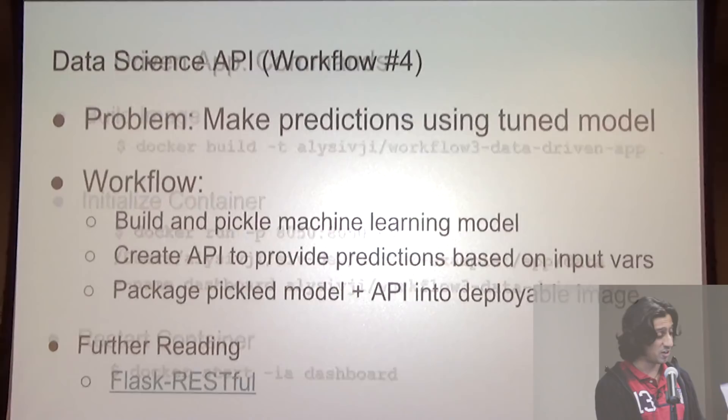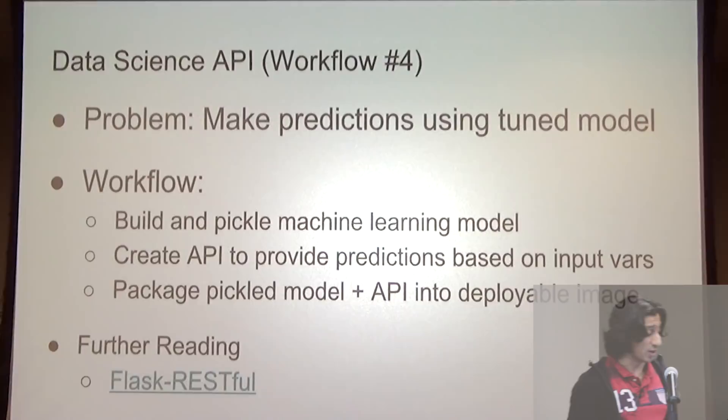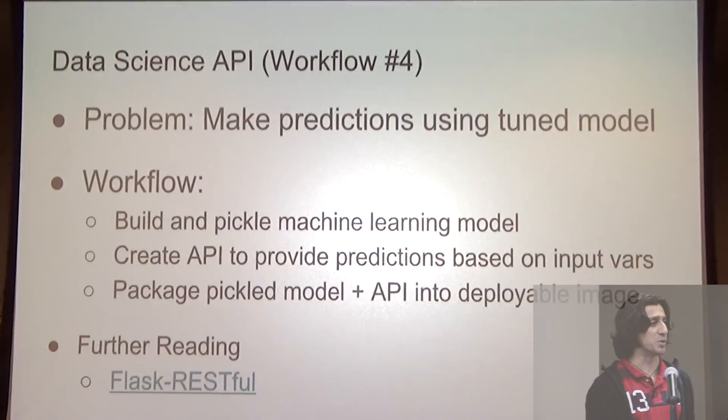Workflow number four is what I call the data science API — and this is going to make data scientists into data engineers. Usually when you build a model you're waiting for somebody else to deploy it to production, so why not just do it yourself? We're going to build a model, pickle that model, create an API around it, and that API takes in our input variables and outputs a prediction.